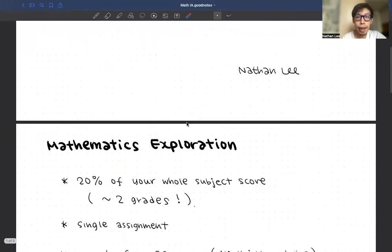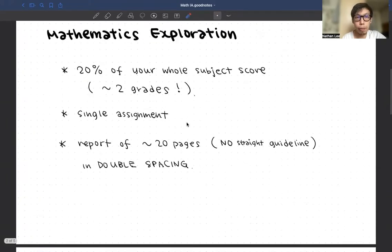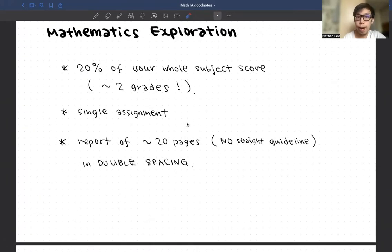Now this is a very crucial part next to the very conventional exams, because it's weighting like 20% of your whole subject score. According to the past grade boundaries, this is talking about as much as two grades, which means from a seven to a five. So don't underestimate this and just do it well.